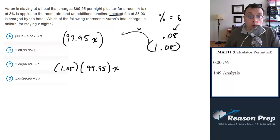Now, there's also a one-time untaxed fee of $5. This is very important. We are not going to be multiplying the 5 by 1.08 because it's untaxed, and we're not going to multiply the 5 by X because it's a one-time fee. It doesn't matter how many nights you stay. So we're just going to add 5 to the end of this because it's a $5 fee just tacked on at the end.